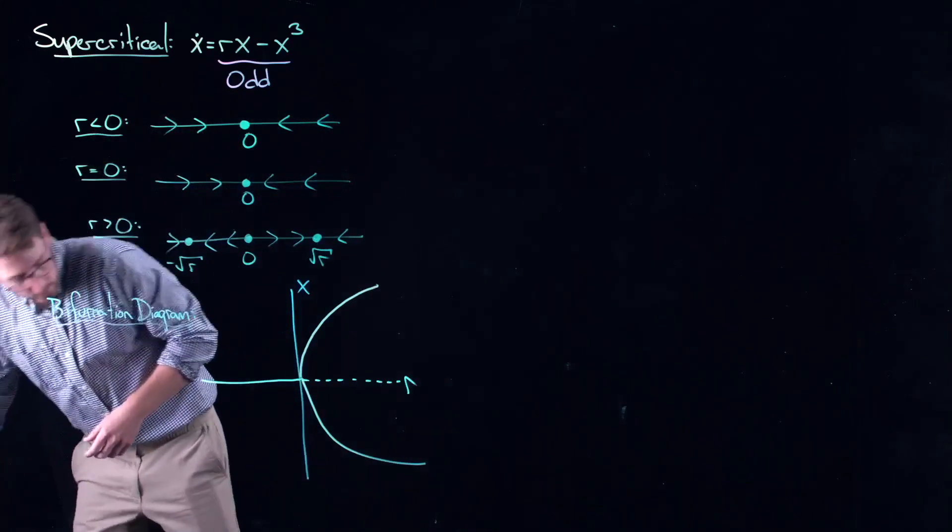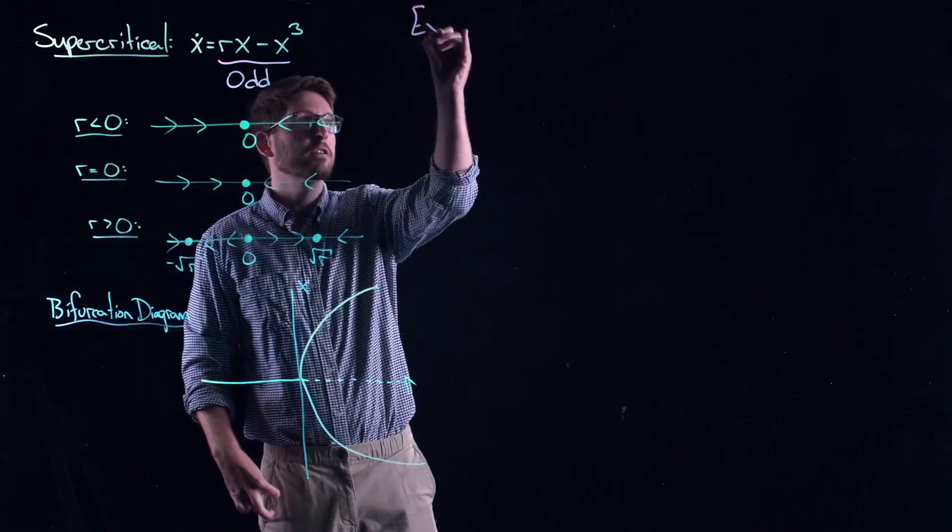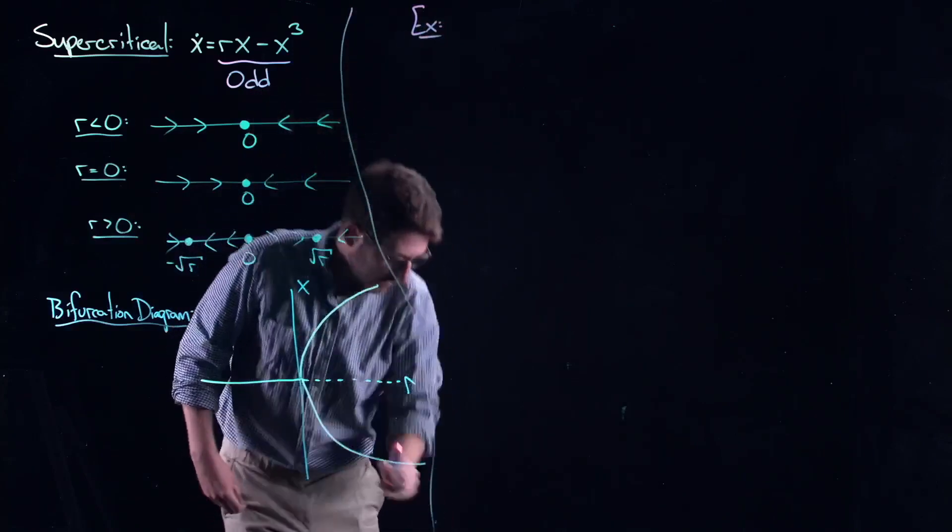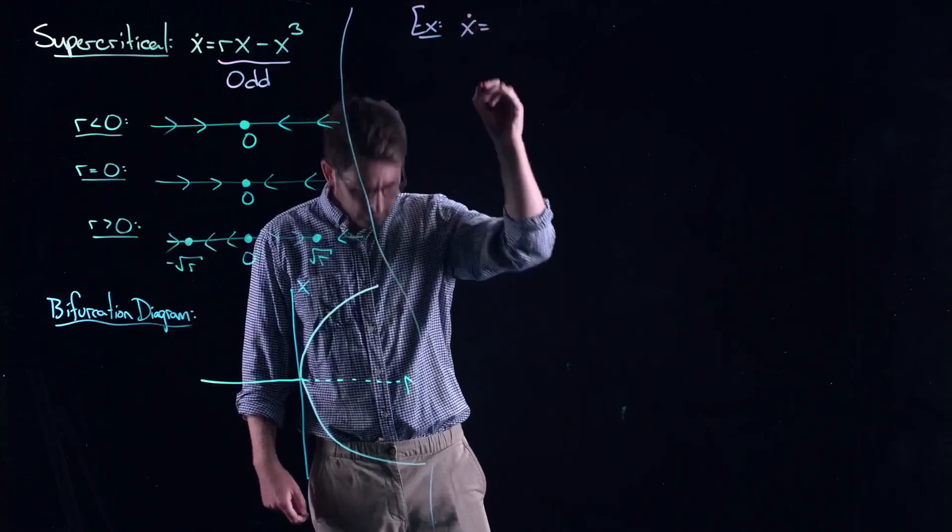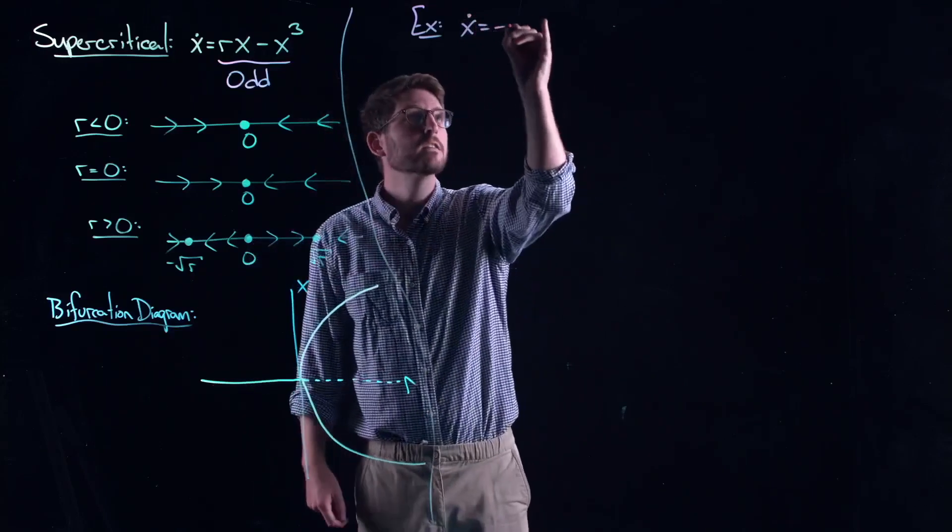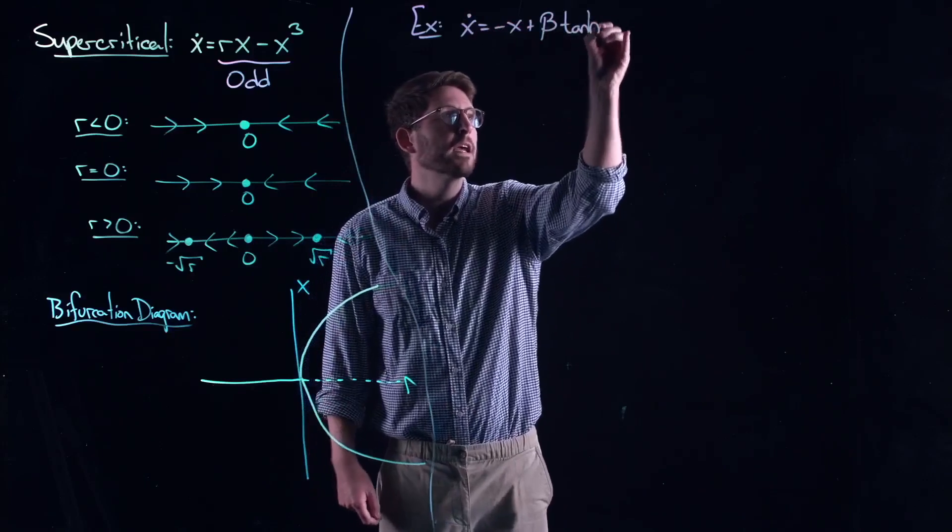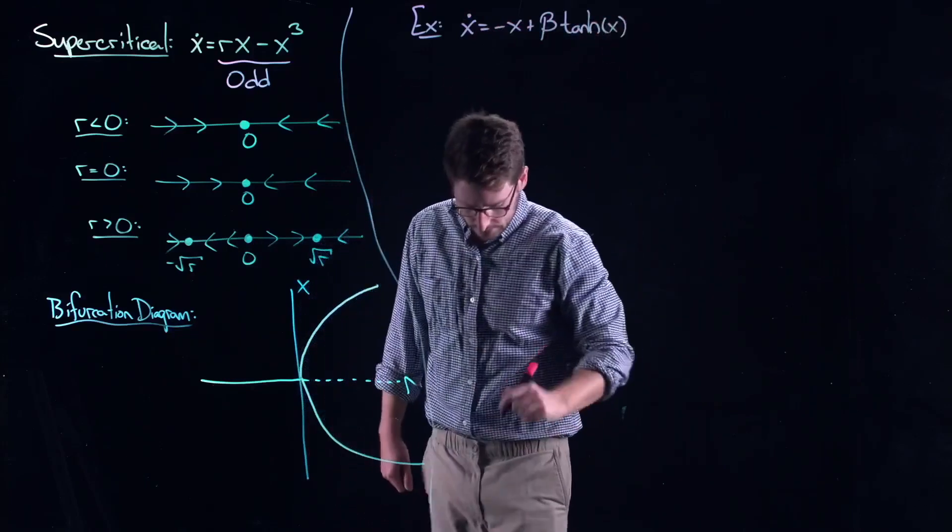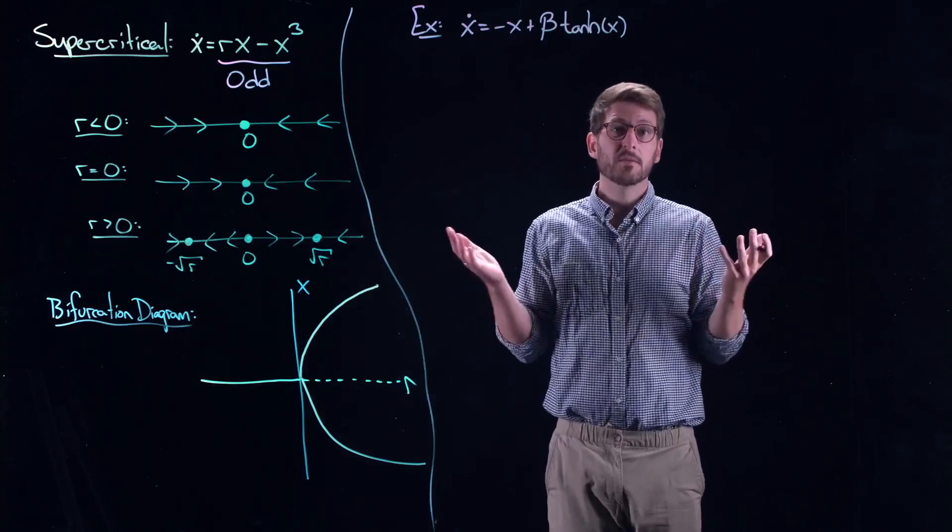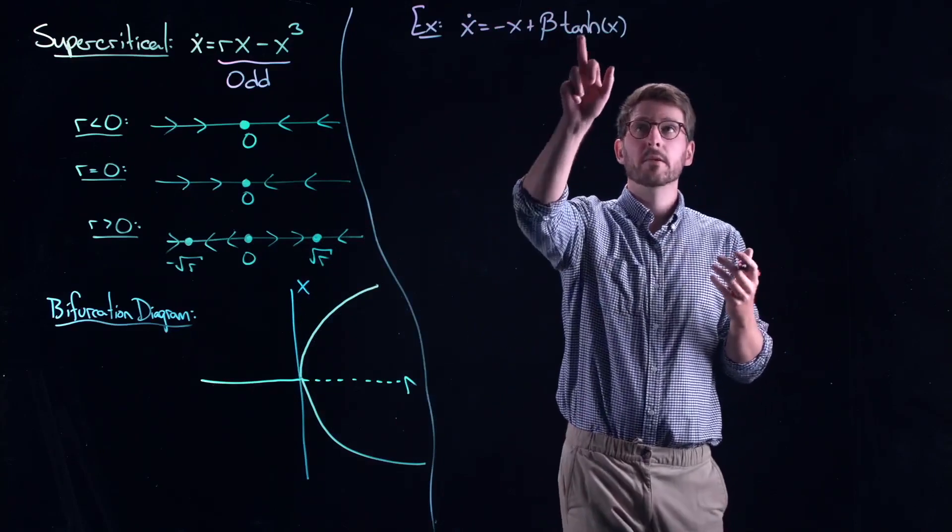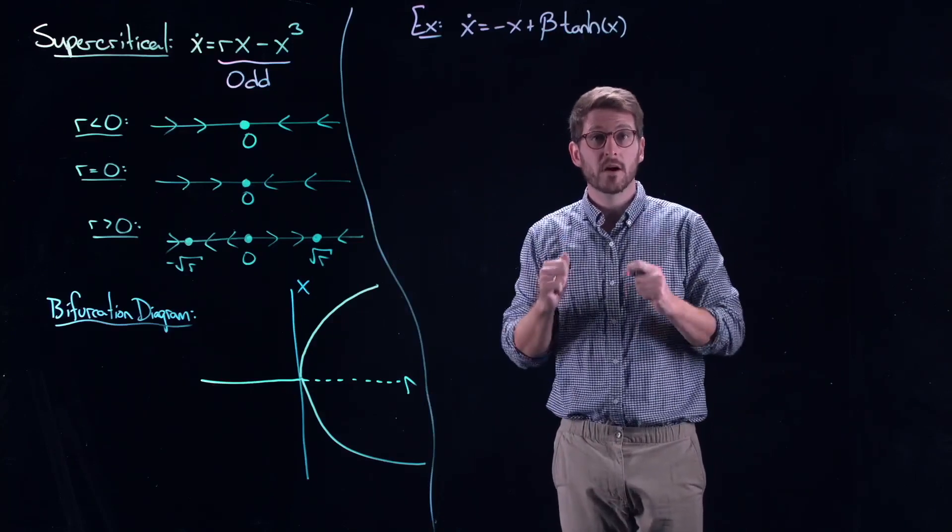Let's see where we might find a pitchfork bifurcation out in the wild. Let's look at a really simple, fun model. And this is negative x plus beta hyperbolic tangent of x. Now, I didn't just make this model up because I thought it would be a cute model.